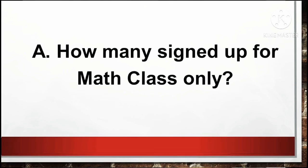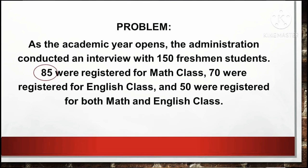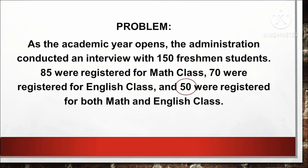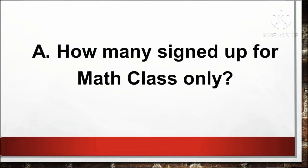Let's try to answer the first question. How many signed up for math class only? Some of us might say that the answer is 85. But as you can see, we have a given 50 were registered for both math and English. And we are asked, how many signed up for math only? So, how are we to know this? It is by the use of the Venn diagram.